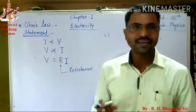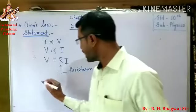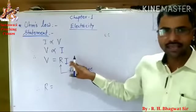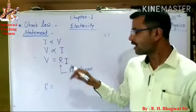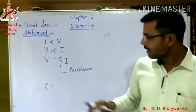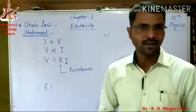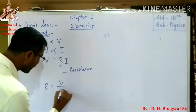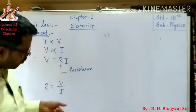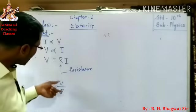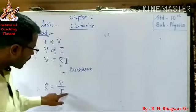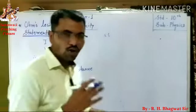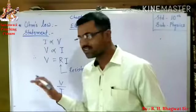Therefore, we can write the resistance of conductor R is equal to V divided by I. We can also say that the ratio of potential difference to the current flowing through the conductor always remains constant. That constant is known as the resistance of that conductor.